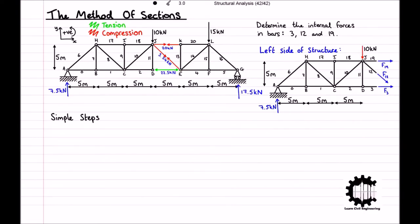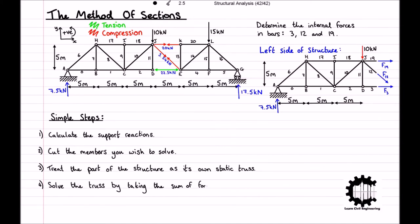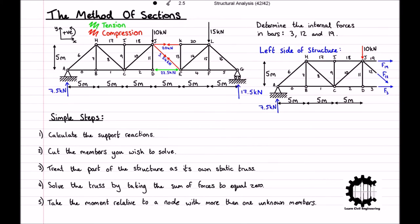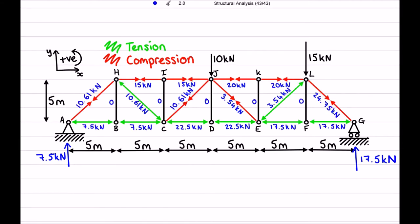This method can be summarized into simple steps: firstly, calculate the reactions at the supports; then make a slice through the members you wish to solve; treat that part of the structure as its own static truss and solve by taking the sum of forces equal to zero; and finally, take the moment relative to a node where more than one unknown member converges. As a challenge, why don't you have a go at solving some of the other members? Here are the internal forces for each bar — well done if you attempted any and got them correct.